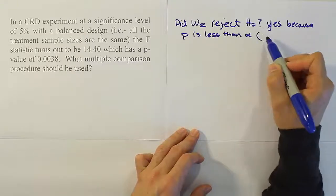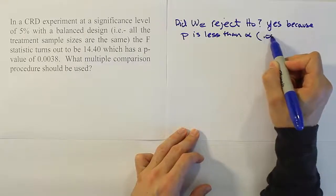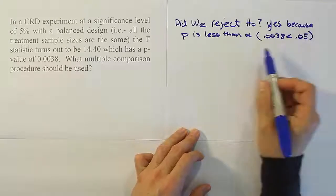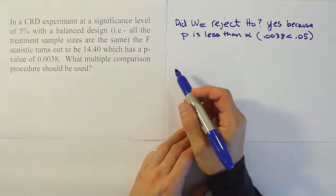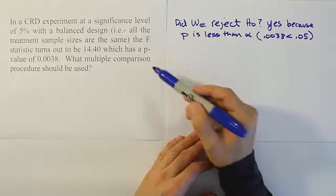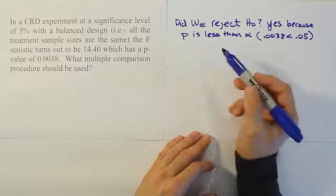Remember, p is 0.0038, and that's less than 0.05. So because of that, we rejected the null hypothesis. Now, because we rejected the null hypothesis, we can move on to answer the question, what multiple comparison procedure should we use?